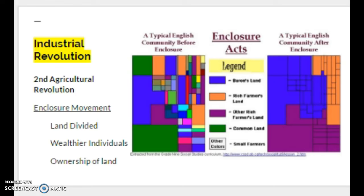AP Human Geography team, we're back with part two of our discussion of agricultural revolutions. On your screen right now we have our second agricultural revolution, which is closely tied to the Industrial Revolution. Truly, the second agricultural revolution allowed the Industrial Revolution to begin. We talked about the Neolithic Revolution over 12,000 years ago, and it wasn't until the 1700s that we see this phase to maximize agriculture for society.